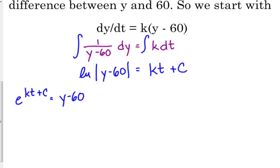We're going to rewrite the E to the KT plus C as CE to the KT, and then we're going to add the 60 from the other side to get our equation solved for Y. And Y represents the temperature.